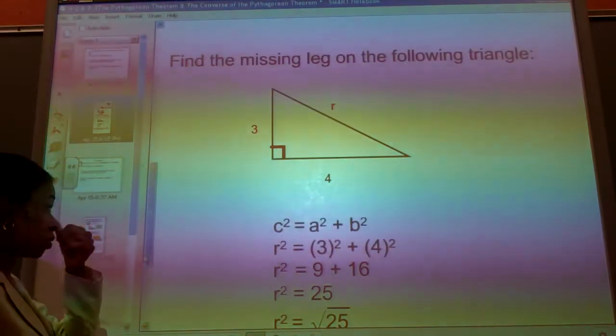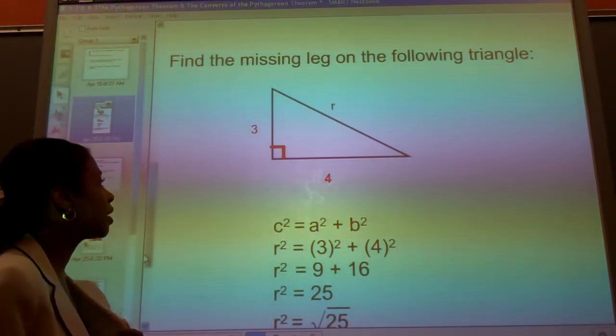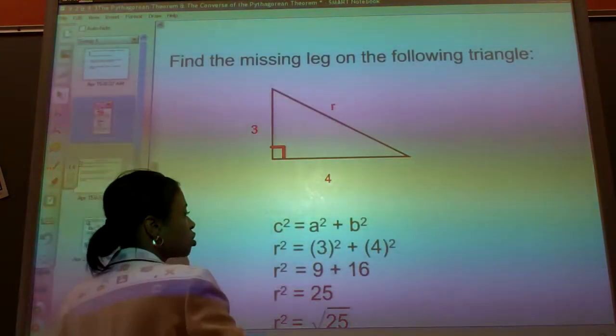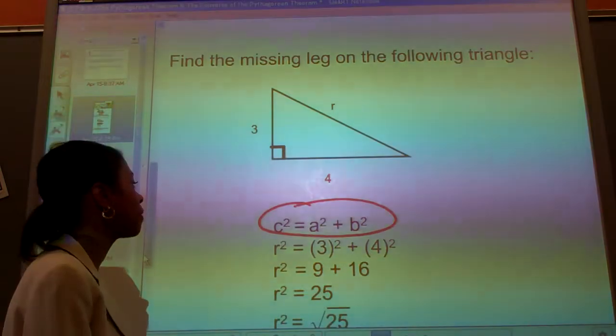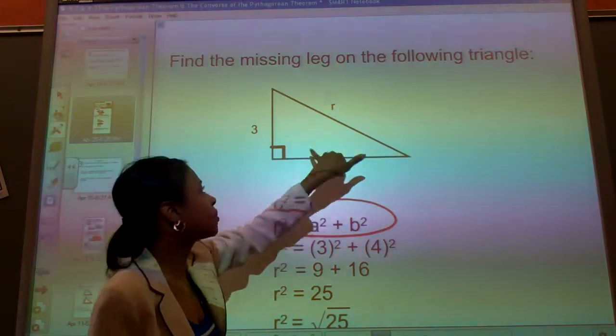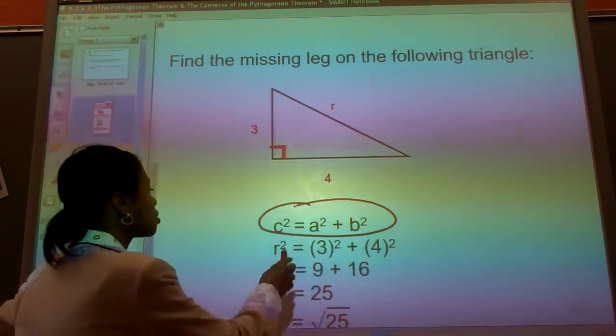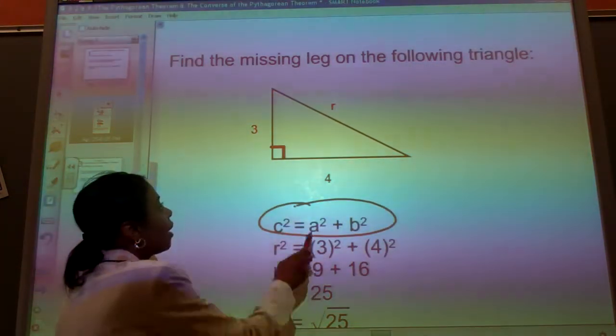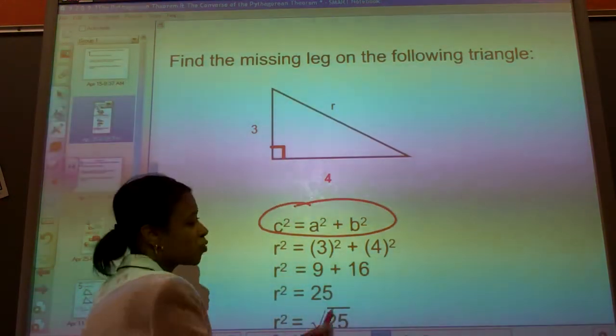Find the missing leg on the following triangle. I have a 3, 4. We've basically just done this one right here. We know the equation for a Pythagorean theorem is C squared is equal to A squared plus B squared. In this case, what is the hypotenuse? It's opposite the 90-degree angle. In this case, it's called R.